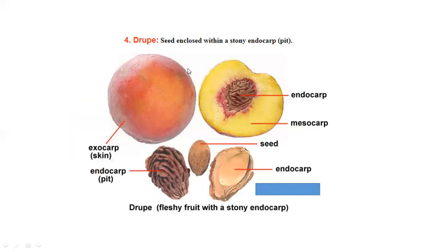Next is drupe. In drupe, the seeds are enclosed by a stony endocarp. There's an outer exocarp, a fleshy mesocarp, and a hard stony endocarp protecting the seed.